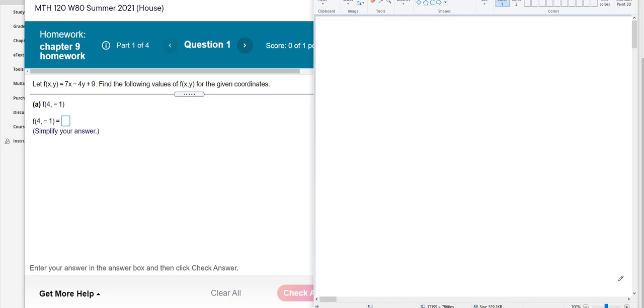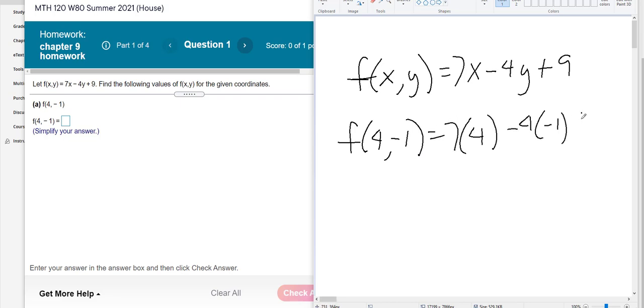To evaluate a function that is multivariable, it simply means you need to insert or substitute the given value for x and the given value for y. So if they say f of 4, negative 1, you're just going to substitute the 4 in for the x and the negative 1 in for the y.